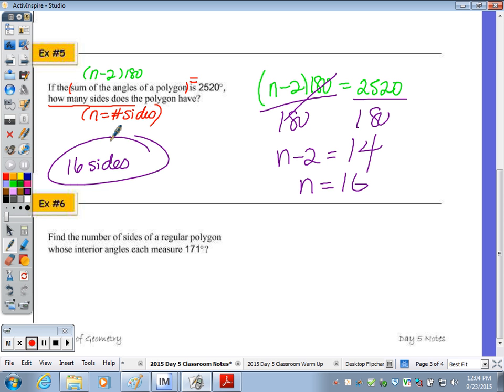Last one. Find the number of sides, so I'm solving for n of a regular polygon. That means all sides and angles are congruent, if you need to make note of the vocab, whose interior angles each measure 171 degrees.